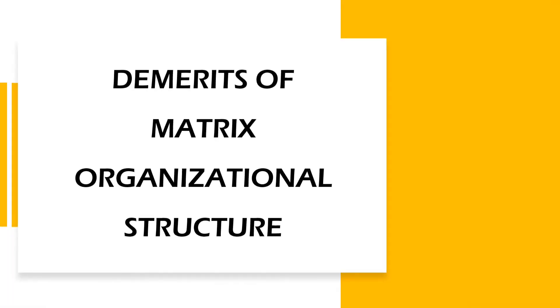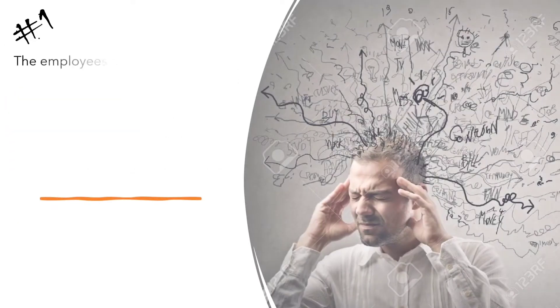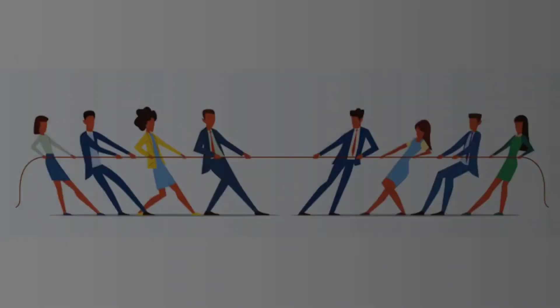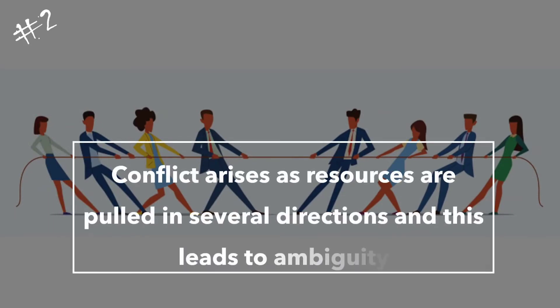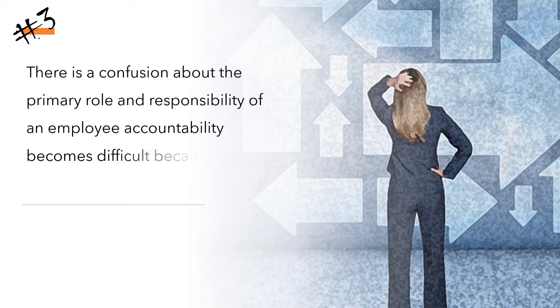Demerits or Disadvantages of Matrix Organizational Structure: Employees are working under multiple bosses, and sometimes situations arise where one boss is played against the other by an employee, which results in confusion. Conflict arises as resources are pulled in several directions, leading to ambiguity. There is confusion about the primary role and responsibility of an employee, and accountability becomes difficult because of shared responsibility.